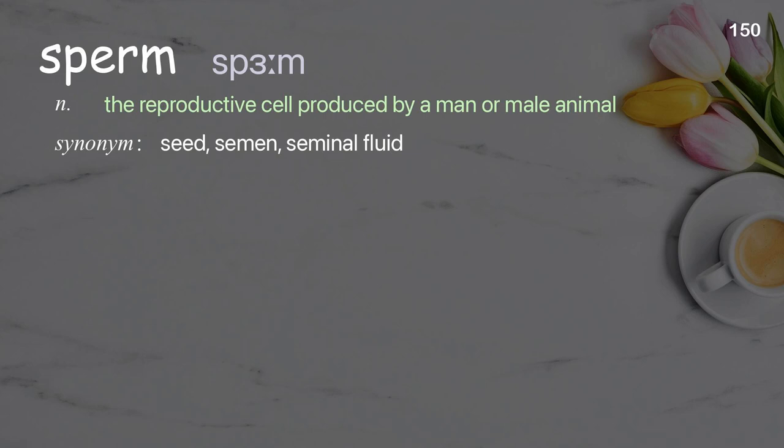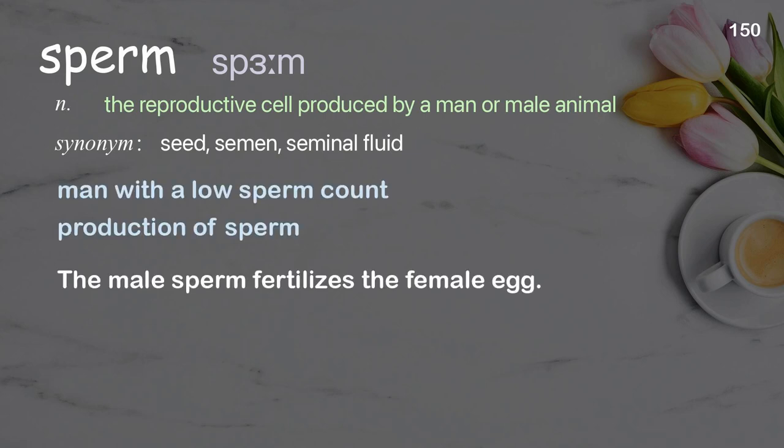Sperm: the reproductive cell produced by a man or male animal. Examples: man with a low sperm count, production of sperm. The male sperm fertilizes the female egg.